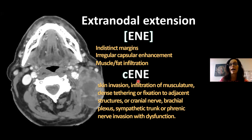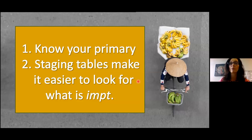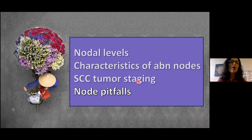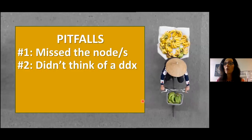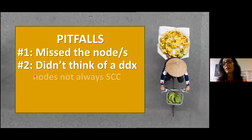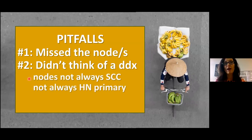Let me finish with a couple of node pitfalls — where we go wrong. I think radiologists do better than they think they're doing with lymph nodes, but there are two big areas where misses happen. Pitfall one: somebody missed the nodes — they just didn't see the node, or if they did, they didn't report it. Pitfall two: they didn't think of a differential diagnosis. Nodes are not always squamous cell carcinoma, not always from the head and neck, and what looks like a node is not always a node.